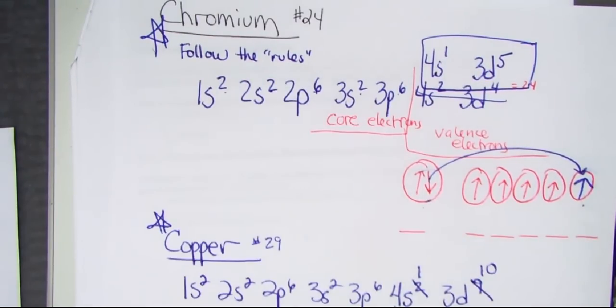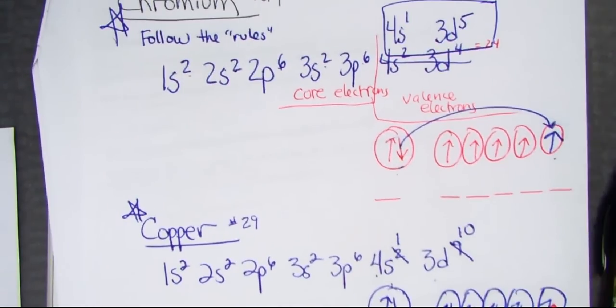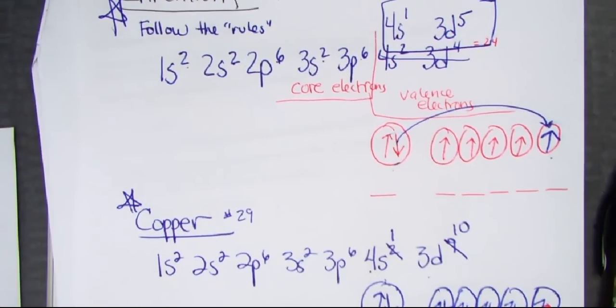And again, there are more exceptions, but these are the two that the AP board asks us to know, chromium and copper.